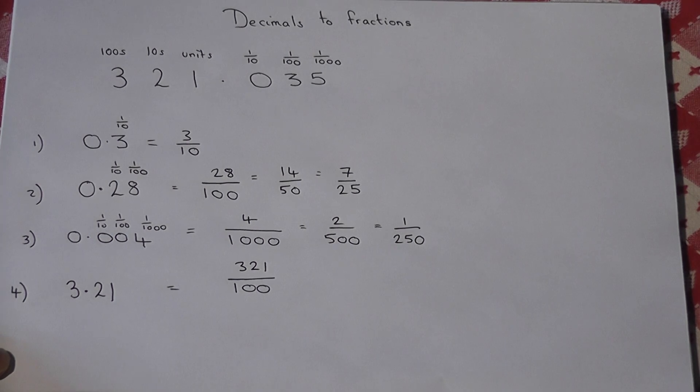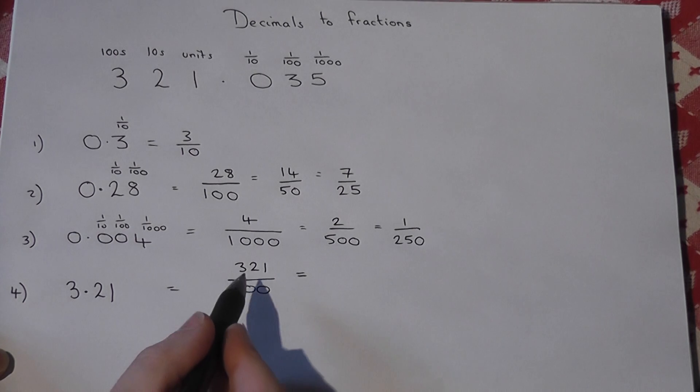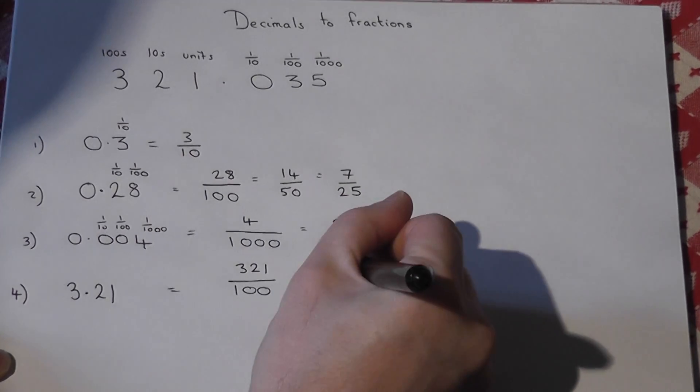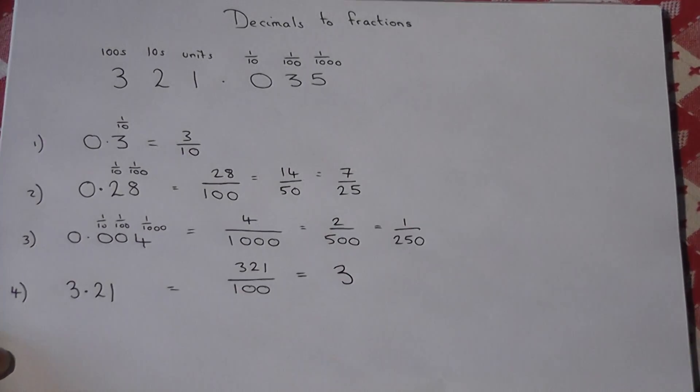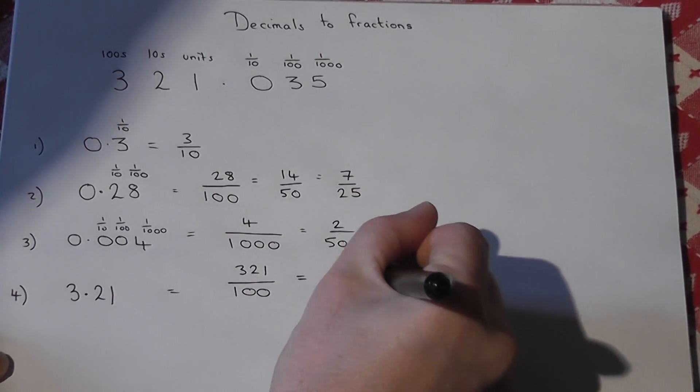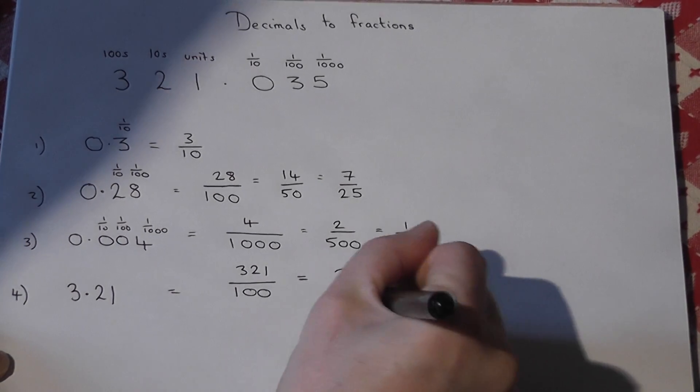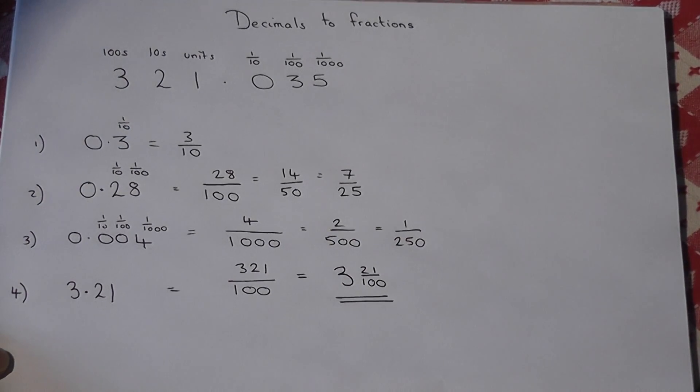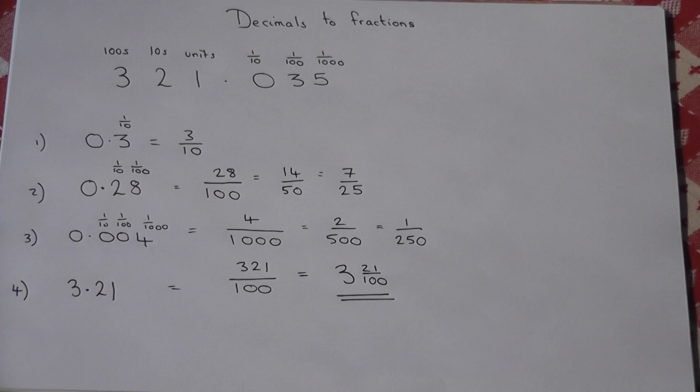Now this could be written as a mixed number, because there are three lots of a hundred in three hundred and twenty-one, so three lots of a hundred in three hundred and twenty-one, remainder twenty-one, so three and twenty-one over a hundred. So that could be written as a mixed number.